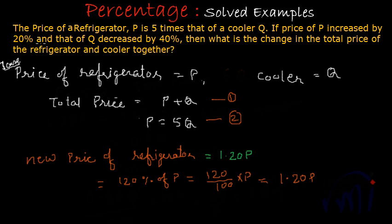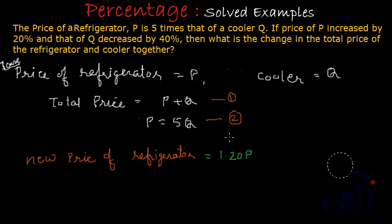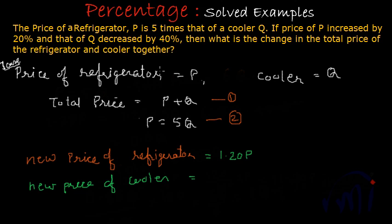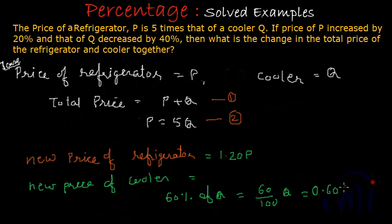If the price of P is increased by 20% and that of Q decreased by 40%, the price of the cooler is decreasing by 40%. The new price of the cooler will be 100 minus 40, that is 60% of the old price. 60% of Q will be 60 divided by 100 times Q, or written as 0.60Q. So the new price of the cooler will be 0.60 times its old price.